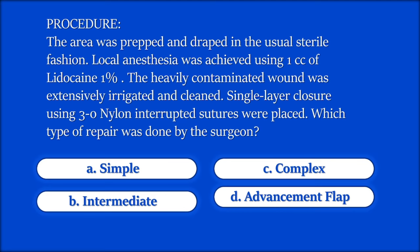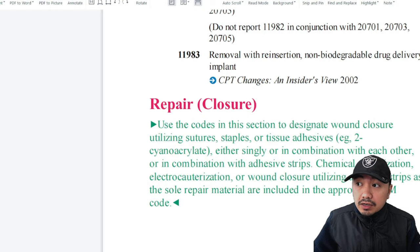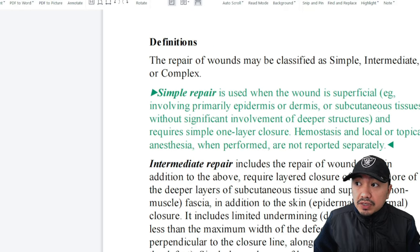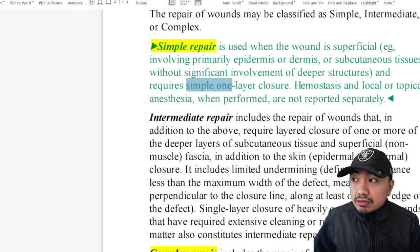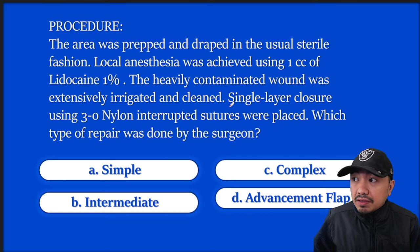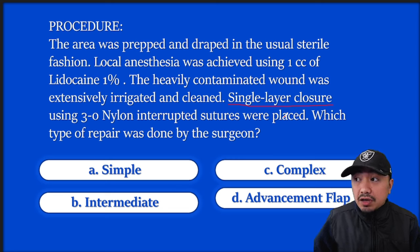Let's answer this question. This can be answered by checking your guidelines on repair. Here you can find the definition of each type of repair, starting from simple down to complex. Simple repair is when the doctor closes the wound using a simple or single one-layer closure. Based on this scenario, single layer closure was done; however, you also have to consider the terms 'heavily contaminated wound' and 'extensively irrigated and cleaned.'